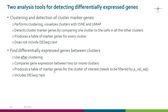Let's have a look at the tools available in Chipster. There are two analysis tools that do differential expression analysis. The first is built into the clustering tool, called 'Clustering and detection of cluster marker genes.' It performs the actual clustering, visualizes the clusters, and detects markers by comparing one cluster to all other cells, producing a table of marker genes for every cluster. This tool does not include DESeq2 because it would be very slow in this context. DESeq2 is available in the other tool called 'Find differentially expressed genes between clusters.'